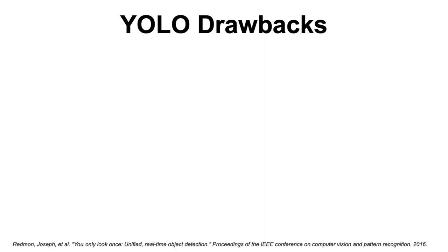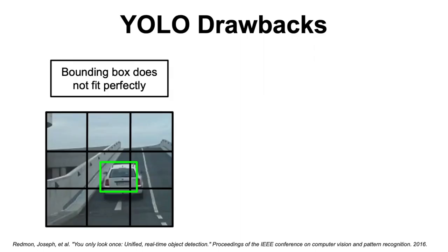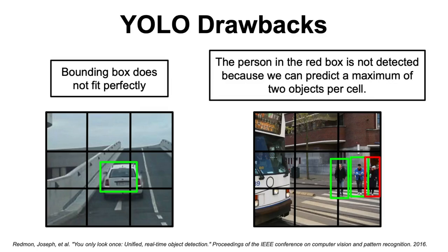It goes without saying that the YOLO architecture comes with its own drawbacks. For instance, it sacrifices localization accuracy for speed, so the resulting bounding boxes might not precisely fit the objects. Also, due to the fixed number of anchors in the output, you have a limited number of objects you can detect in each grid cell. Thus, multiple versions of YOLO have appeared in recent years, each one trying to address one or multiple limitations of the original architecture — the latest one, at the time of recording this video, being YOLO 8.